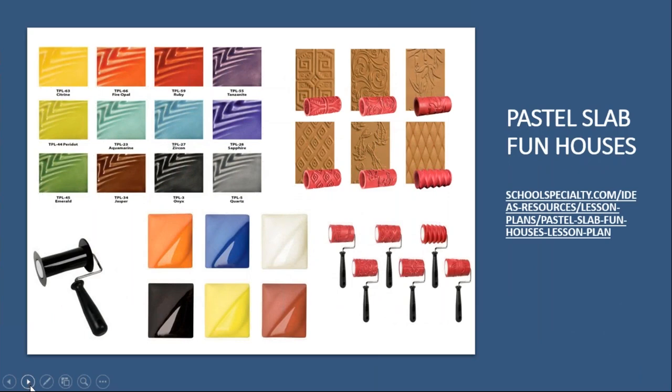Here are some of the materials used. The fun textures come from the Amoco texture rollers, and the tile cutter to cut the slabs is shown as well. Then we have the Amoco glazes — Teacher's Palette Light on top and the Velvet Underglazes on the bottom.